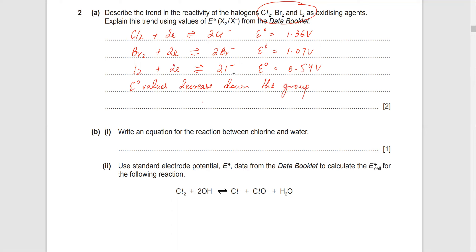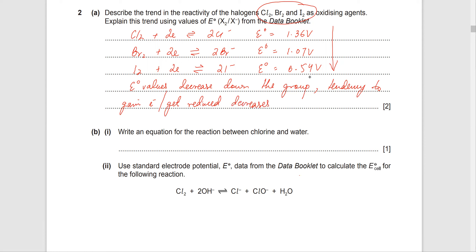These values are clearly decreasing down the group. If E0 is more positive, it has a stronger tendency to gain electrons. So as E0 decreases, the tendency to gain electrons — or tendency to get reduced — decreases down the group. Because of that, they become weaker oxidizing agents. If something is getting reduced, it's acting as an oxidizing agent, and since the tendency is decreasing, they are weaker oxidizing agents down the group.